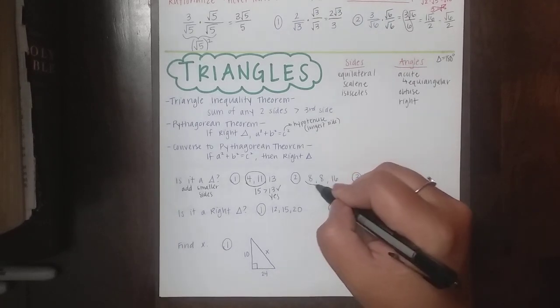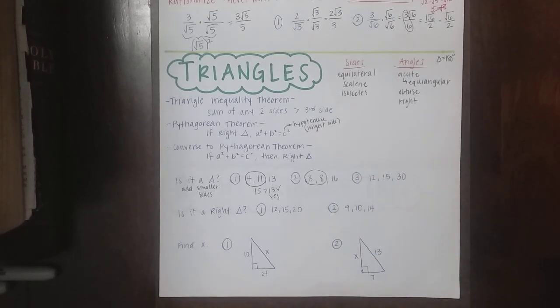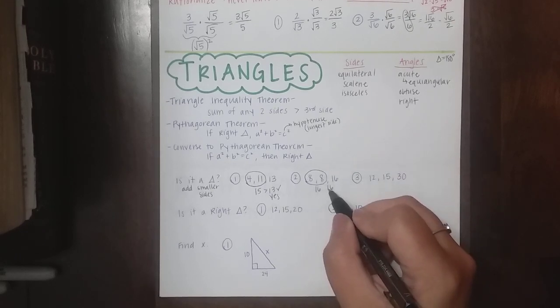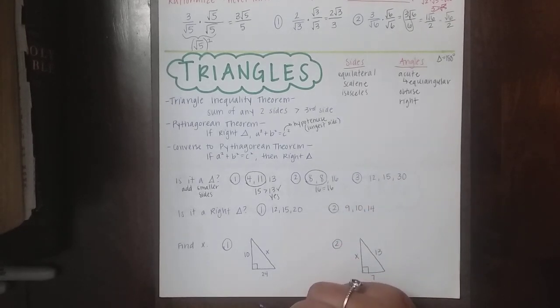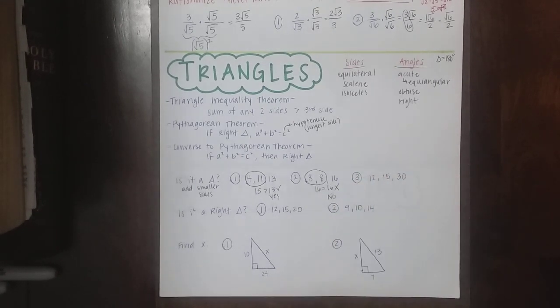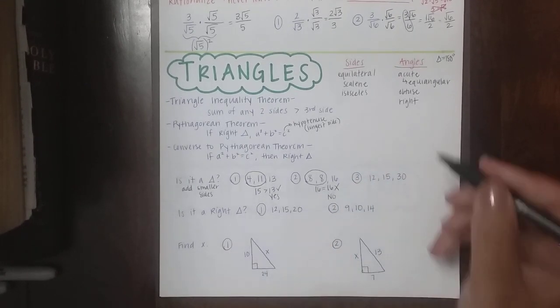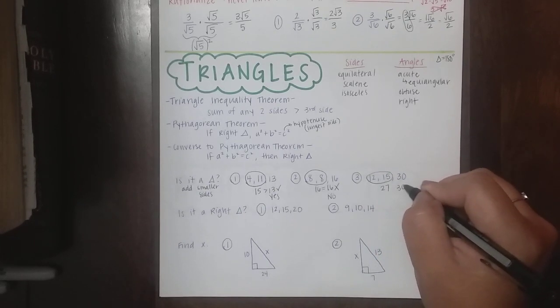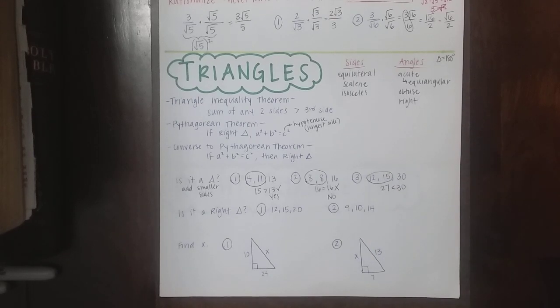For the second one, my two smaller sides are 8 and 8. So 8 plus 8 is 16. But 16 is not greater than 16, it's equal to. So that means no, it's not a triangle. It's got to be greater. And then for the third one, we got 12 and 15, which gives us 27. And 27 is less than 30, not greater. So that one's also not a triangle. So it can't be equal, and it can't be less. The smaller two sides has to add together to get something bigger than the third side, or it won't have enough sides to make a triangle.